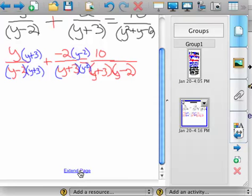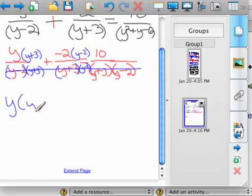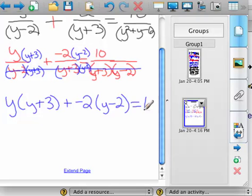So now, once your denominators are the same, you could multiply by the denominator and cross everything out. So they're gone. So we have y times y plus 3 plus a negative 2 times y minus 2 equals 10.